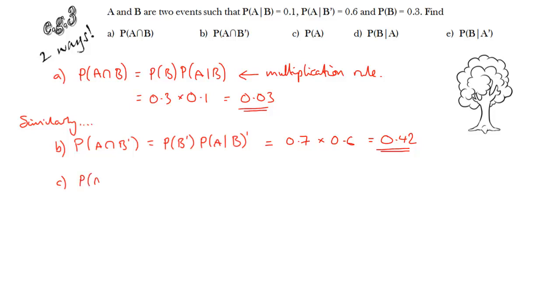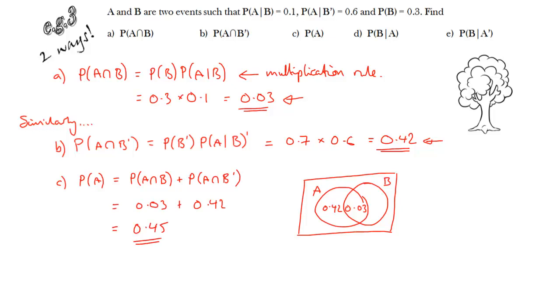Now part C, after a while you'll just be able to see what to do here. But I'm going to draw a Venn diagram to enable us to spot it. So I've got my two events. From part A, I know that the intersection of A and B is 0.03, so I can add that on my diagram. And from part B, check that you understand that the answer to part B is this region here, the probability of the intersection of A with not B. So if I want the probability of A, the whole of that circle for A, I simply have to add these two regions together. So 0.03 plus 0.42 is 0.45.